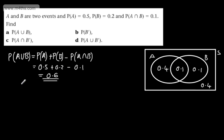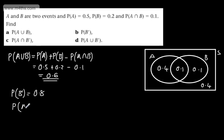The probability of not B equals 1 minus 0.2, which is 0.8. Alternatively, from the Venn diagram it's the A-only region plus the outside. The probability of A and not B: looking at the Venn diagram, it's in A but not in B — that's the A-only region, giving 0.4.